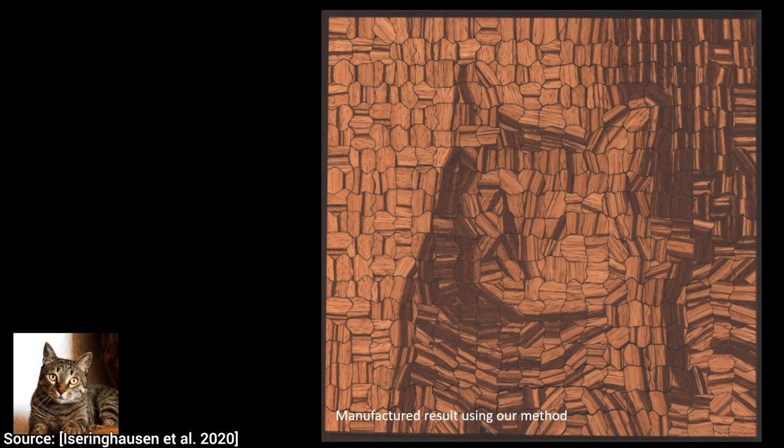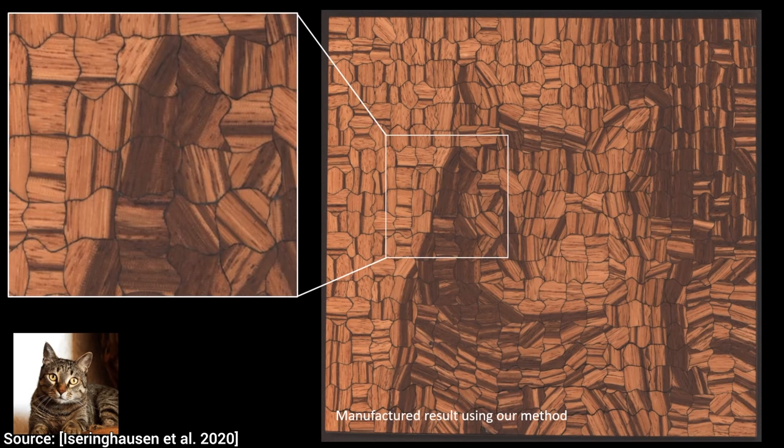This is a reproduction of this cat image by cutting wood slabs into tiny pieces and putting them together carefully. This is computational parquetry.